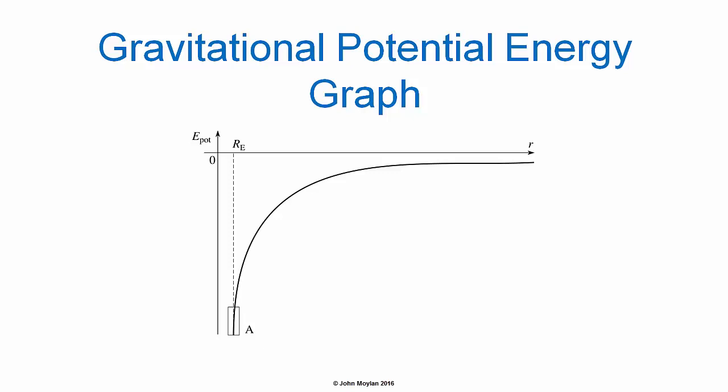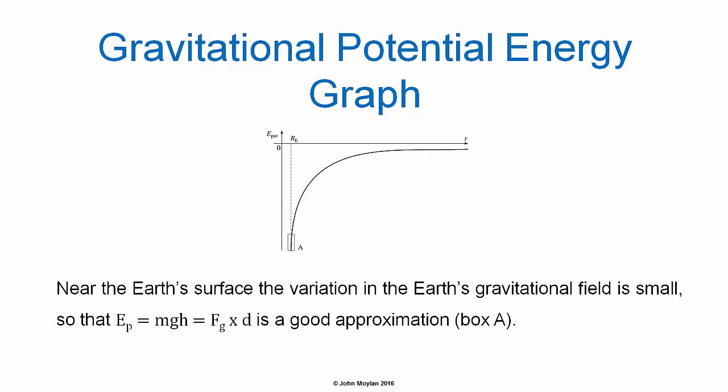This graph is a plot of gravitational potential energy relative to the Earth, with the surface of the Earth represented by the dotted line r subscript E, for radius of the Earth. The distance from the center of the Earth is on the horizontal axis labelled r, and gravitational potential energy is on the vertical axis labelled E subscript pot. Near the Earth's surface, the variation in the Earth's gravitational field is quite small. Therefore, we can use the formula E subscript p equals mgh, mass multiplied by g in meters per second squared multiplied by h, the vertical distance, which equals F subscript g multiplied by d. Near the Earth's surface, F subscript g multiplied by d is a good approximation of gravitational potential energy.